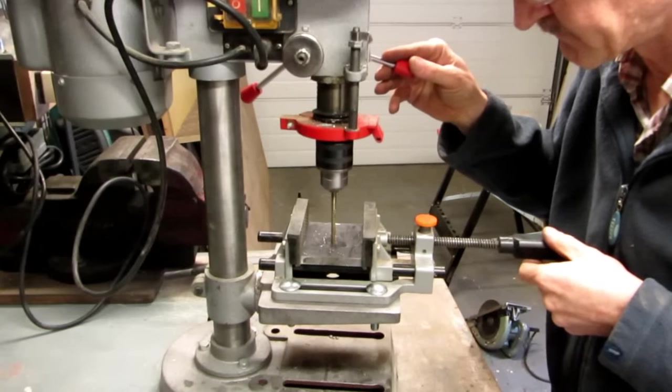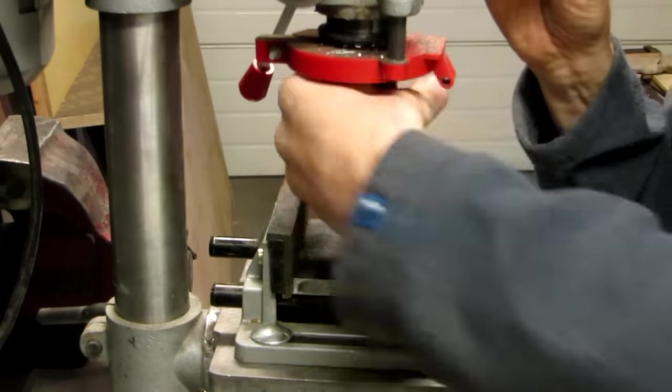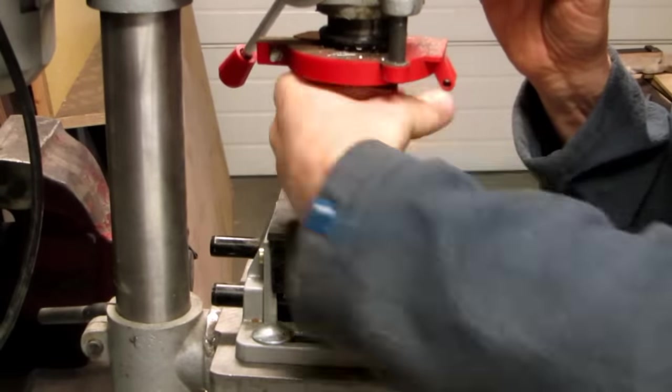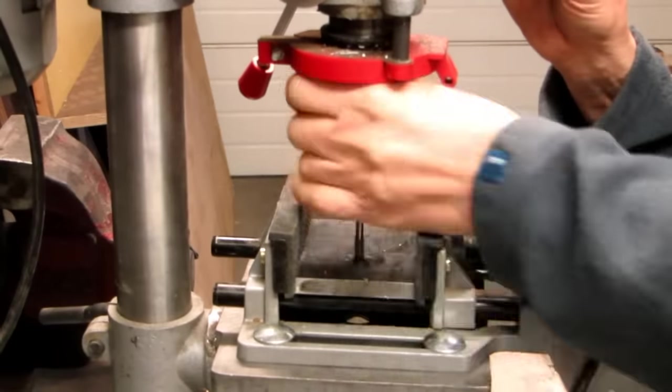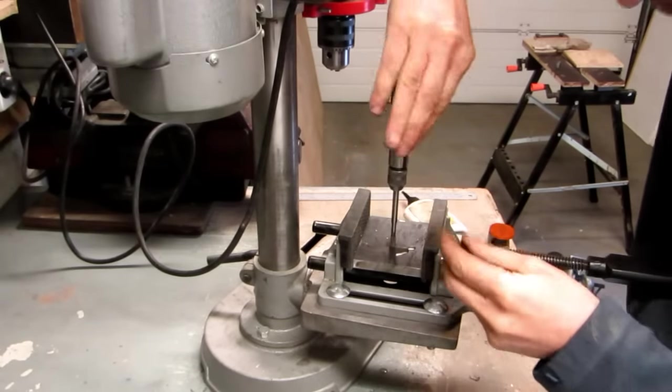I used a drill press for drilling holes. For tapping thread, I first mount a tap in my drill press and turn the chuck by hand to make the thread start straight. Then I use a hand tapping tool to complete the thread.